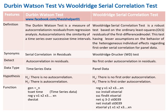Both the Durbin-Watson test and the Wooldridge Serial Correlation test detect autocorrelation in residuals. The data type used in the Durbin-Watson test is time series data, whereas the data type used in the Wooldridge Serial Correlation test is also time series data.